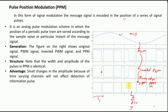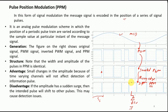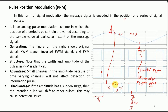A disadvantage of PPM is that if a spike occurs in the message signal, the corresponding pulse would shift into a neighboring pulse's position, causing interference with that pulse. This results in loss of detection for both pulses, which is undesirable.